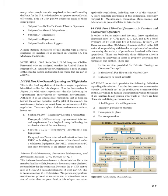14 CFR Part 119, Certification: Air Carriers and Commercial Operators. To better understand 14 CFR Parts 121, 125, and 135, a brief overview of Part 119 is beneficial. There are more than 50 advisory circulars (ACs) in the 120 series alone providing additional non-regulatory information. There are basically three different criteria to analyze to properly determine the applicable regulation: (1) Is the service provided for private carriage or common carriage? (2) Is the aircraft for hire or not for hire? (3) Is it a large or small aircraft? AC 120-12, as revised, defines a common carrier as one that holds itself out to the public as willing to furnish transportation within the limits of its facilities to any person who wants it.